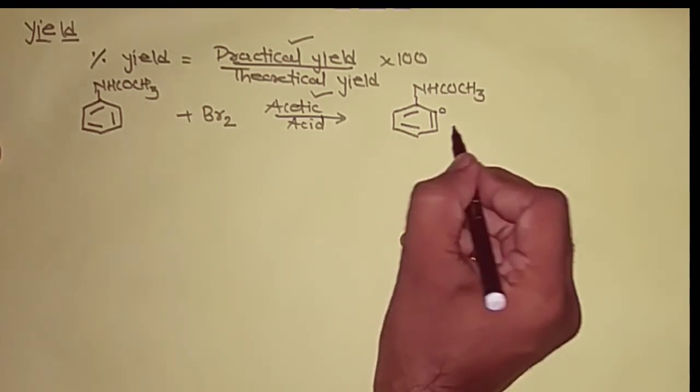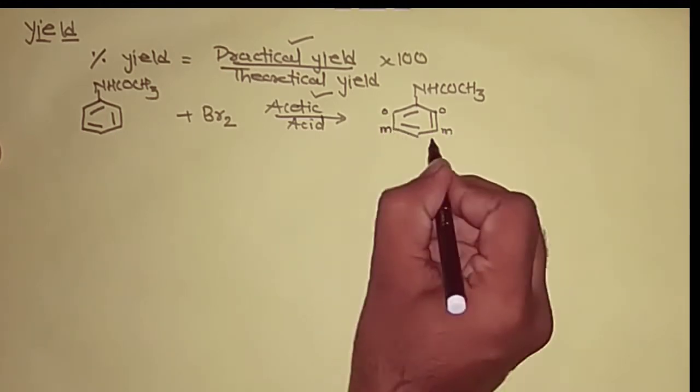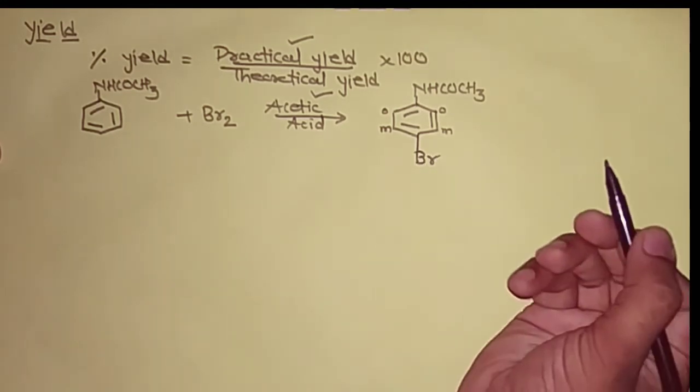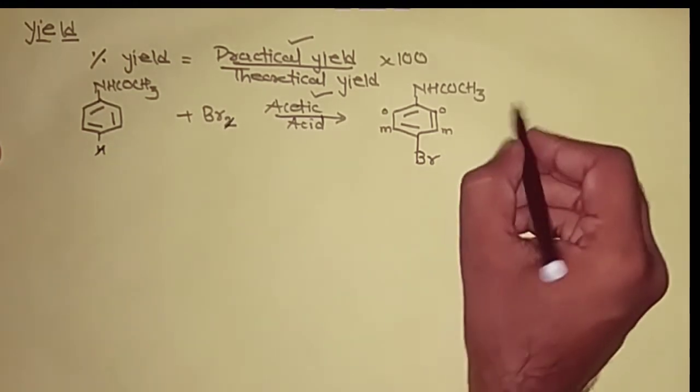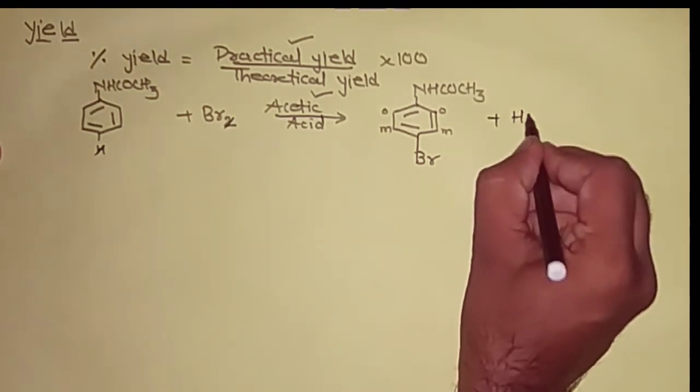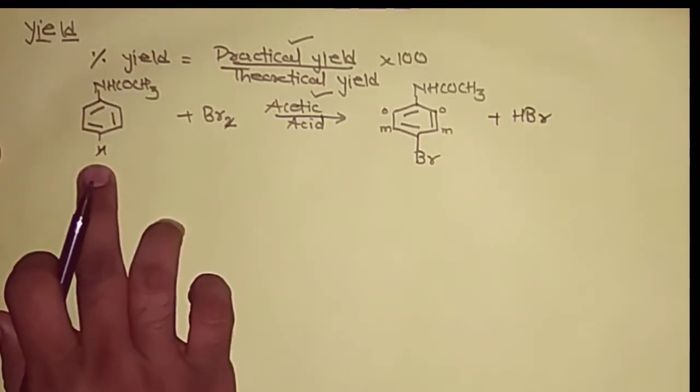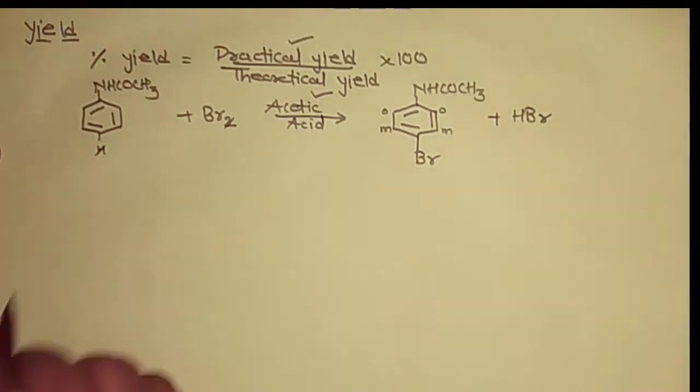Over here, this is acetanilide NHCOCH3. This position is ortho, meta. This is ortho and this is meta. And this position we call it as para. So over here, there is bromine. One hydrogen and one bromine is eliminated, so it gives us HBr. So we say that acetanilide is converted to parabromoacetanilide.